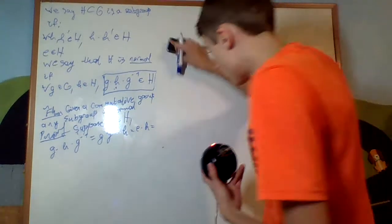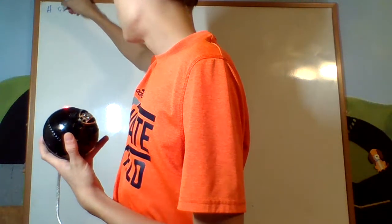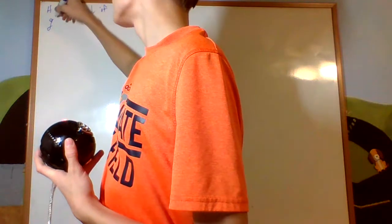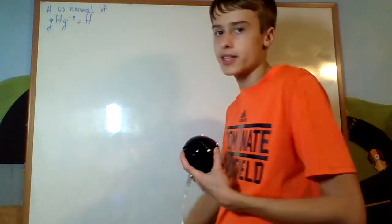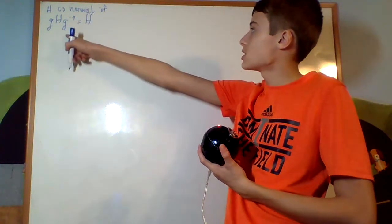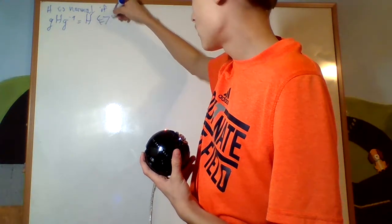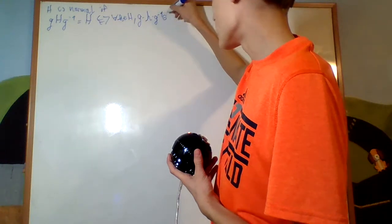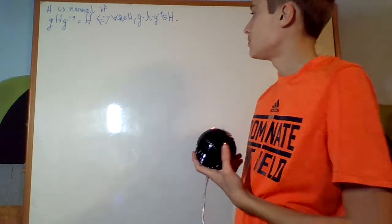So, what we've determined so far, I'm going to do a little overview, because it might have been a little complicated. H is normal if G times H times G inverse is just H. It's closed under conjugation. GHG inverse is equal to H, which is equivalent to just saying that for all H in H, G times H times G inverse is in H. That's the requirement. Cool.